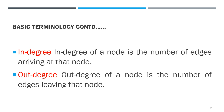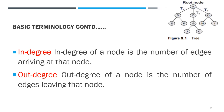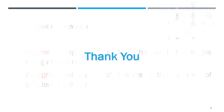Next terminology: in-degree and out-degree. The in-degree of a node is the number of edges arriving at that node. The out-degree is how many edges are leaving the node. These are the basic terminologies of tree data structure. Thank you for watching.